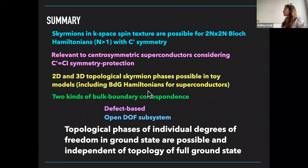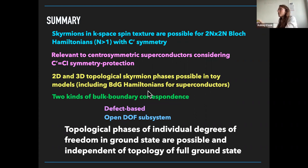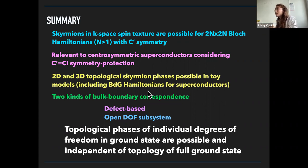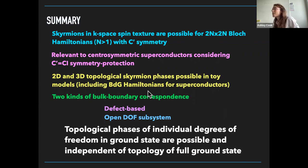You can think of it as having a particle degree of freedom and a hole degree of freedom that are related to one another, and this leads to pulling out some freedom with a matrix representation of the hole sector — the un structure effectively results from this particle-hole constraint.